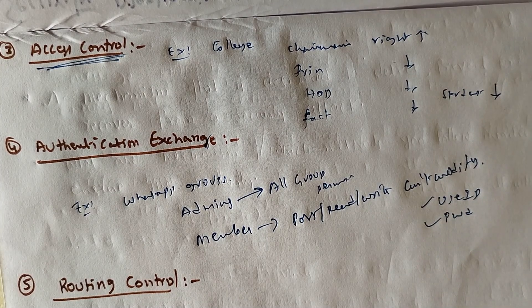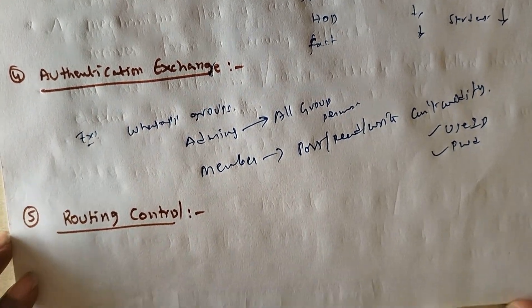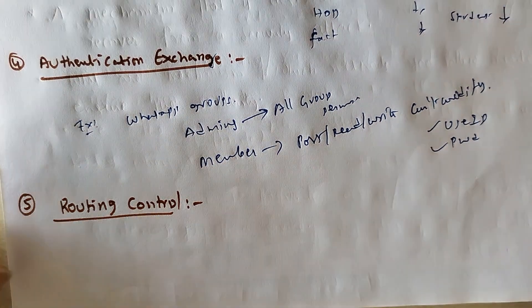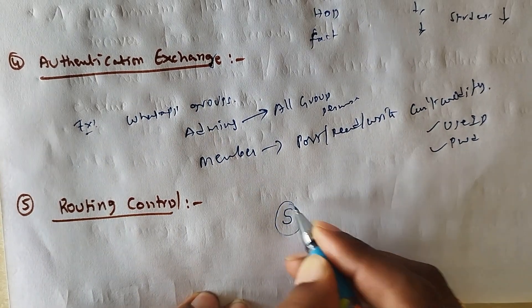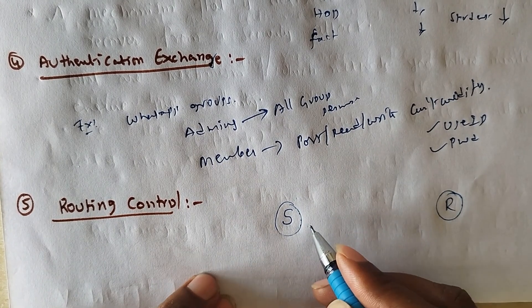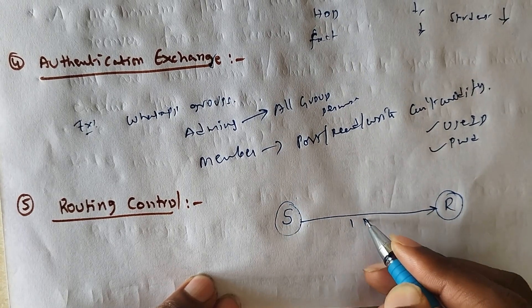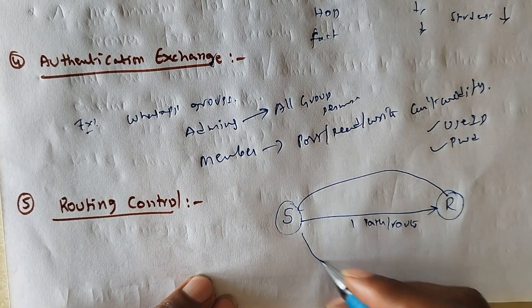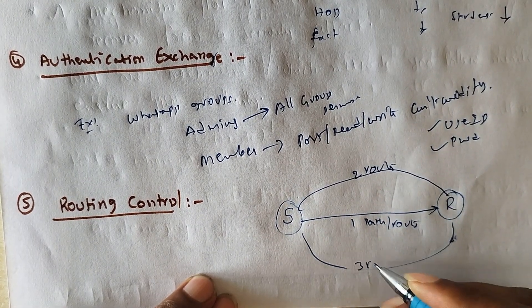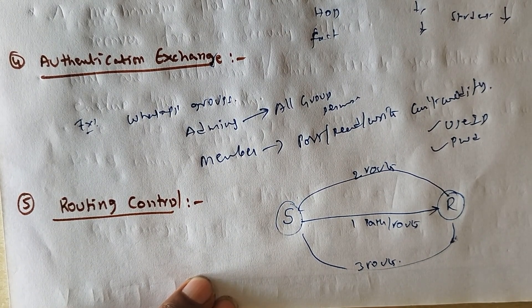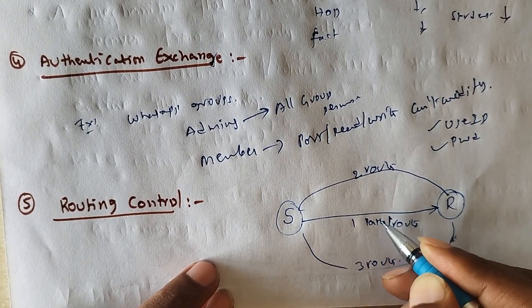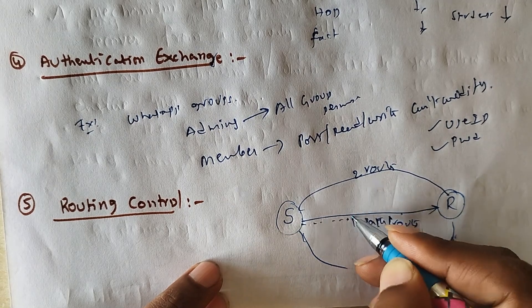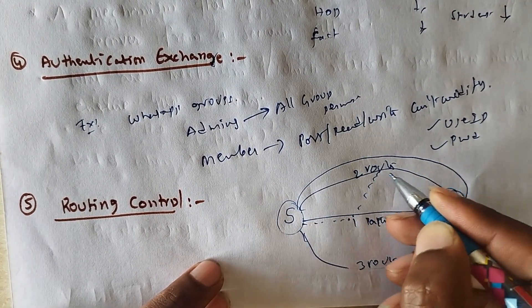The next mechanism is routing control. Routing control is nothing but changing directions so that the attacker will get confused. Here we have the sender and receiver. While transferring data from sender to receiver, there is a first route, and there will also be some alternate routes — a second route and a third route. Suppose the attacker is watching the first route — we will send the message up to a point, then change to the second route.